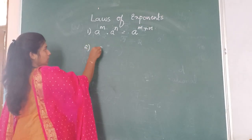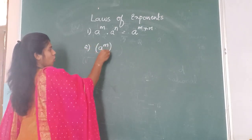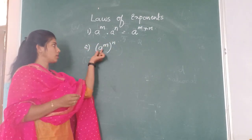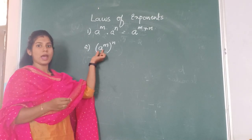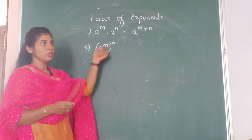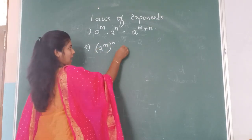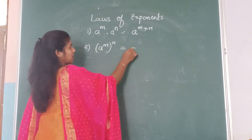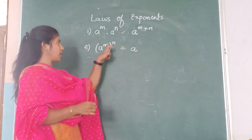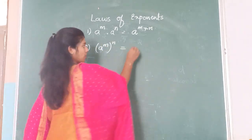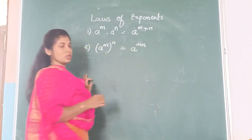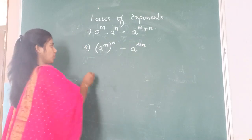The second law: A raised to M, whole raised to N. Here we have one base but two powers. In that case the base is kept as it is, that is A, and we multiply the powers M into N. So the result is A raised to M into N.